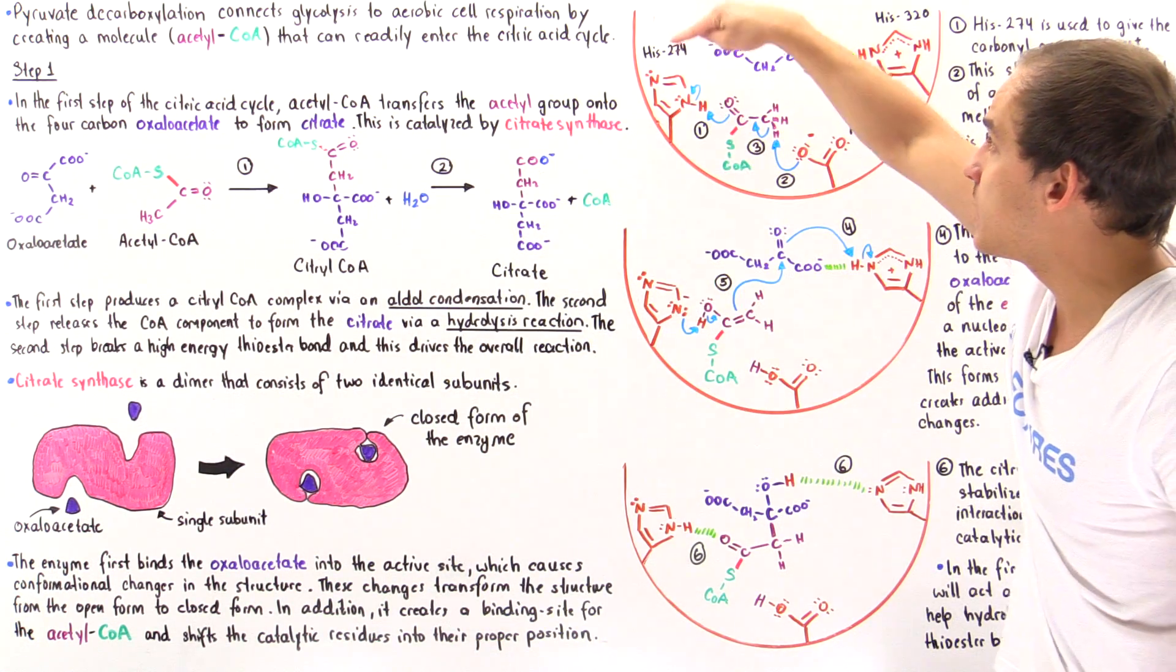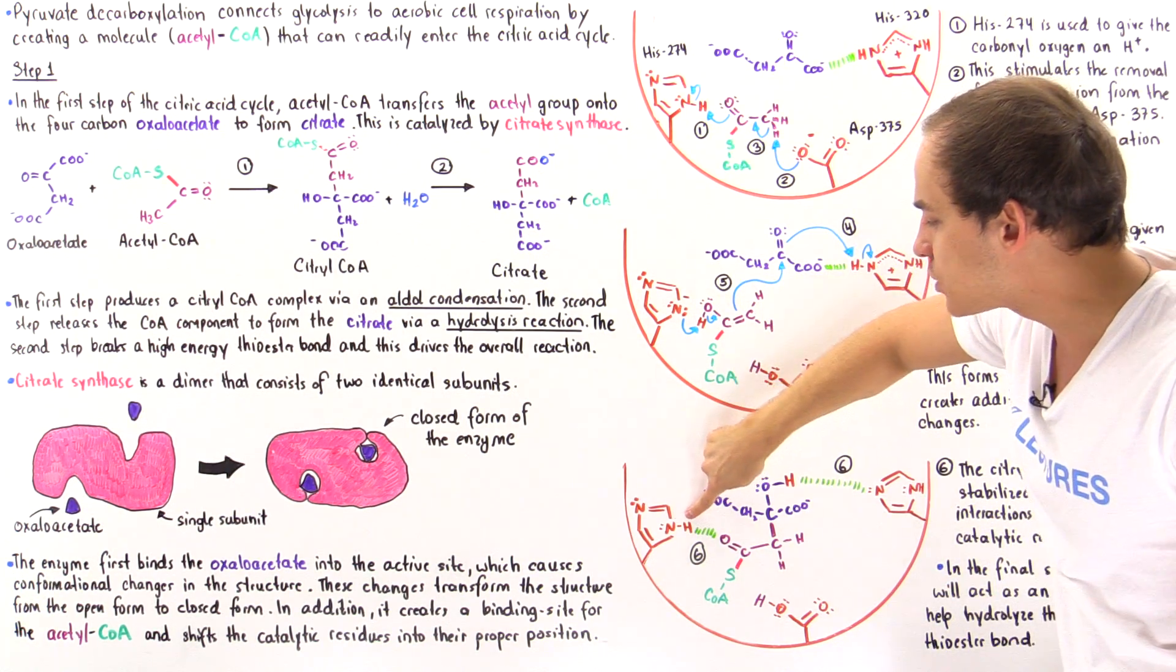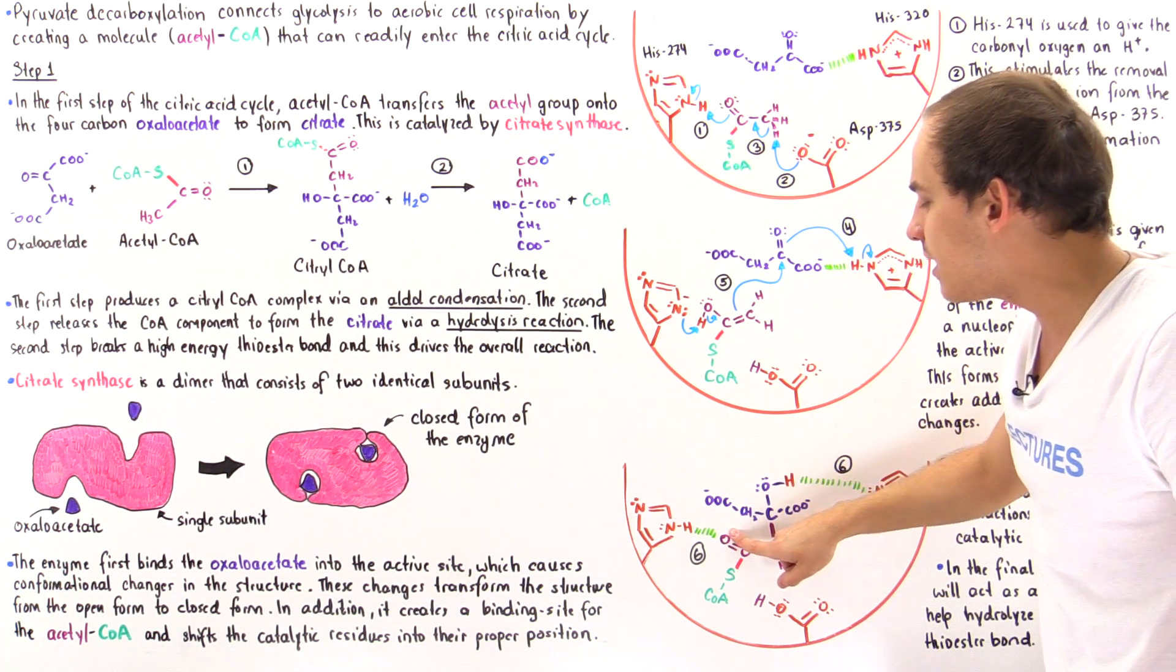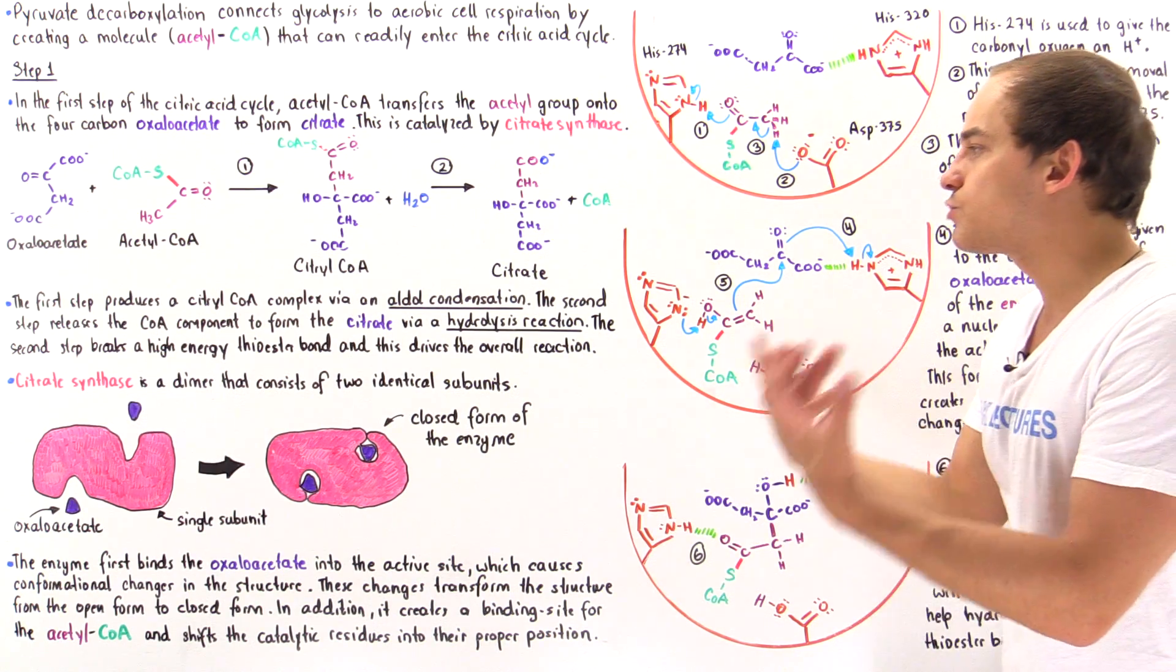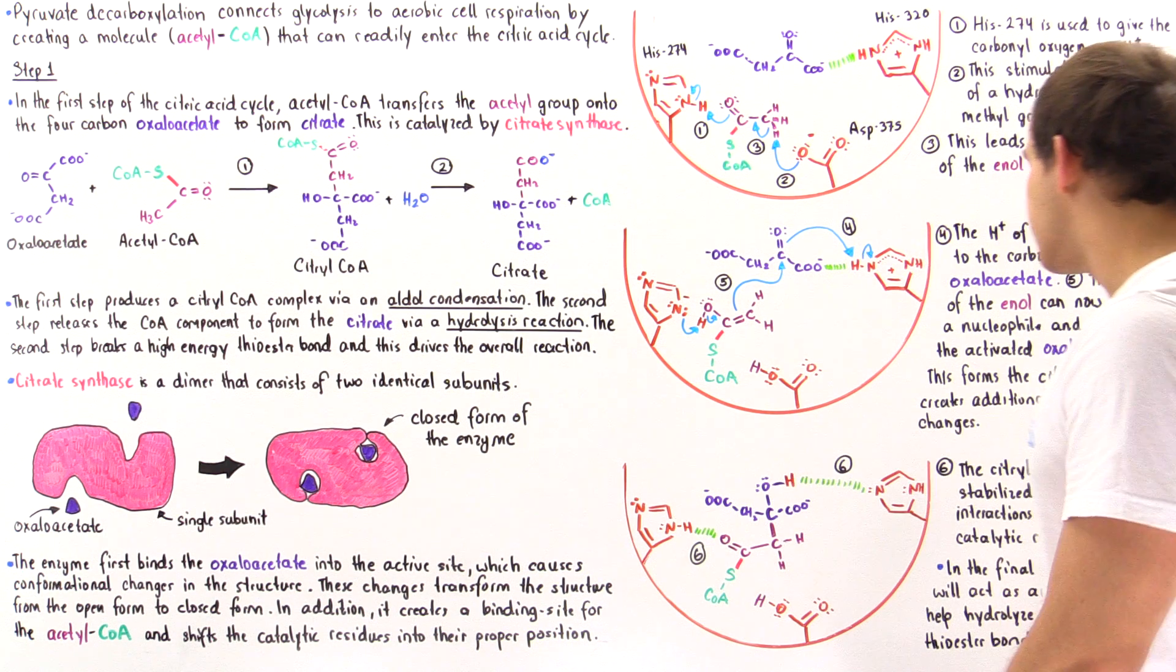This residue, the histidine 274, once again donates the H ion onto this oxygen and that promotes the hydrolysis of the citryl-CoA into that citrate molecule.